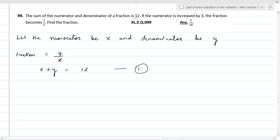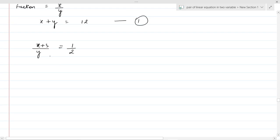If the numerator is increased by 3, the fraction becomes 1 by 2. So we need our fraction here. When numerator is increased by 3, it's x plus 3 upon y equals 1 by 2.